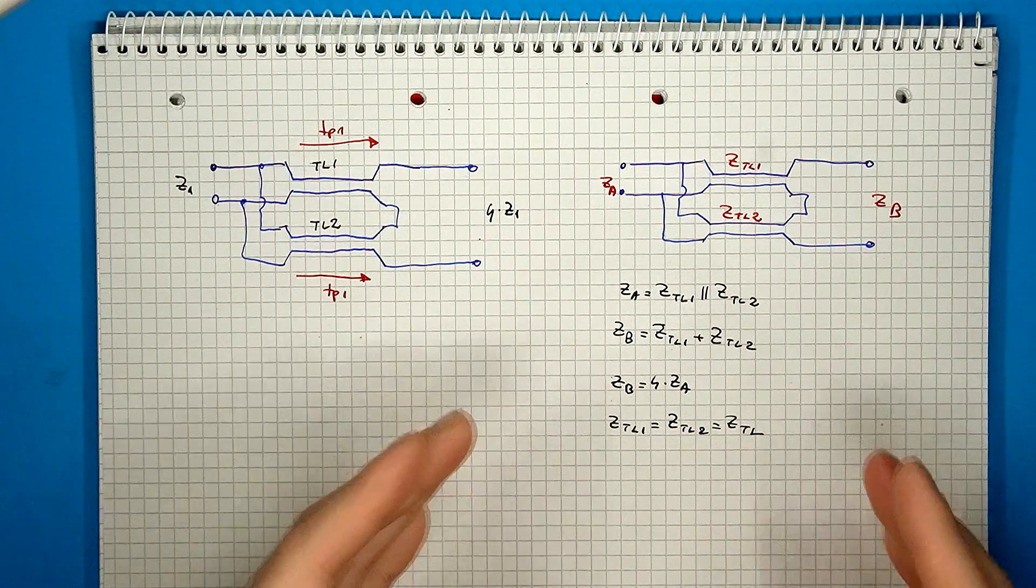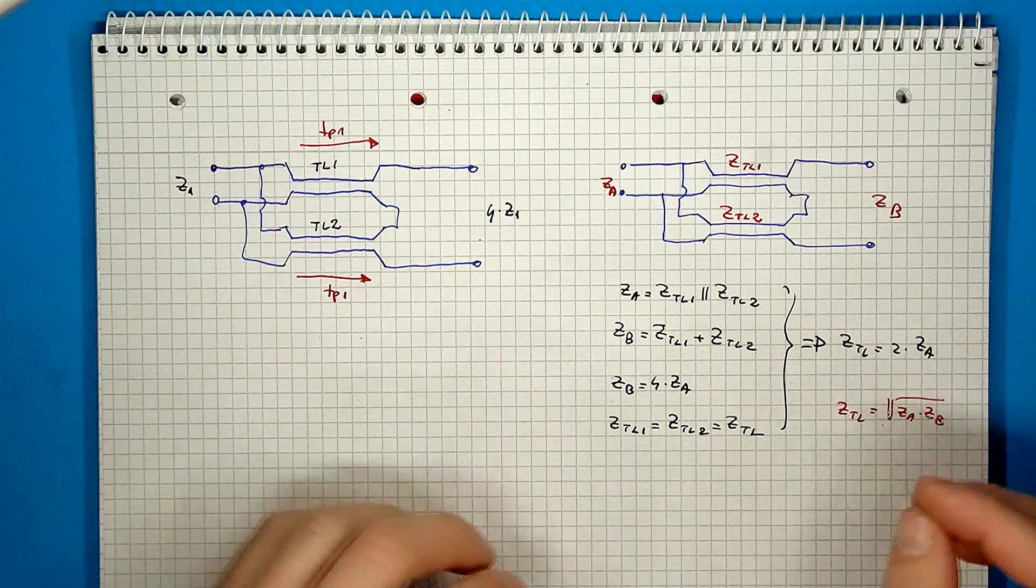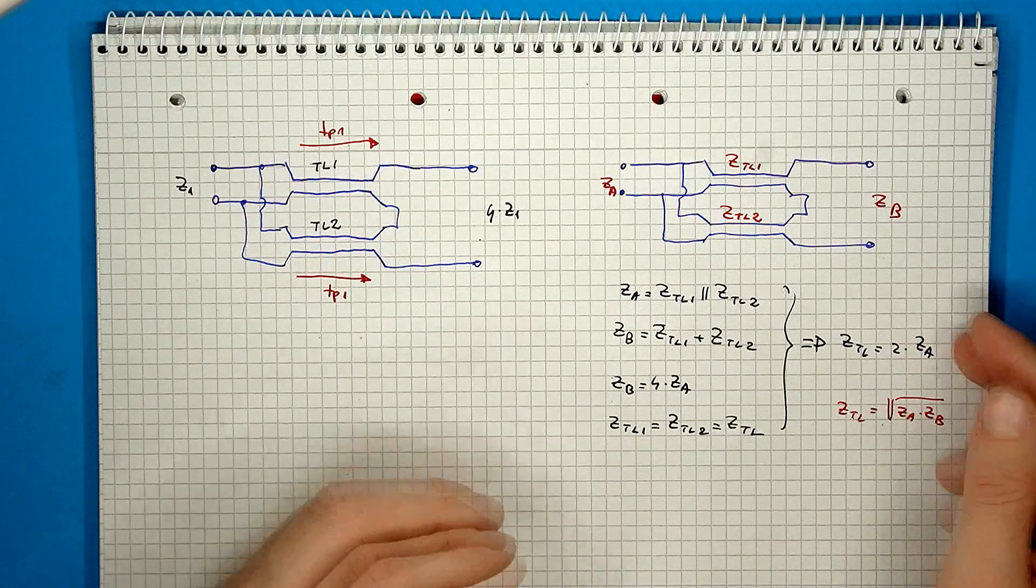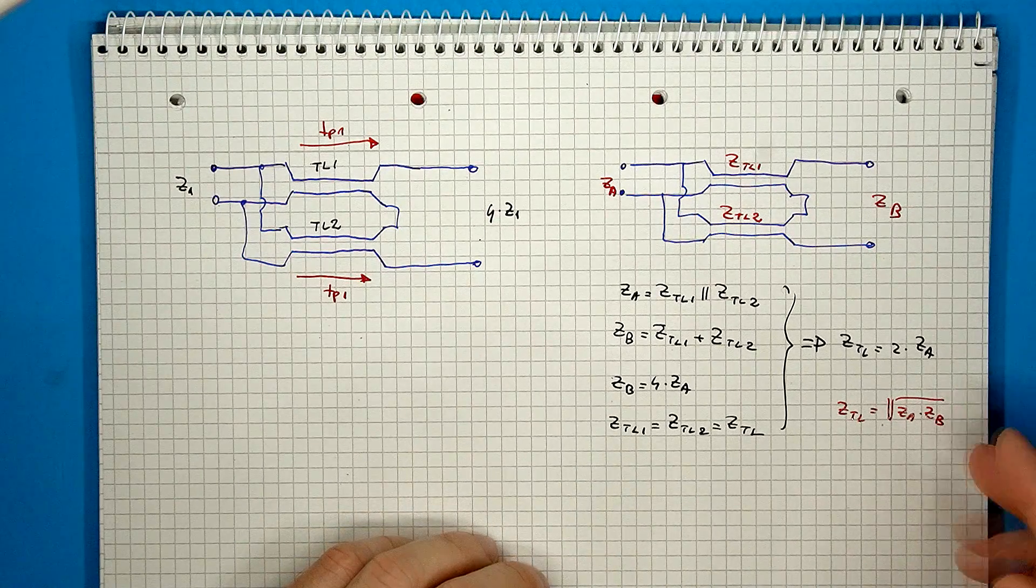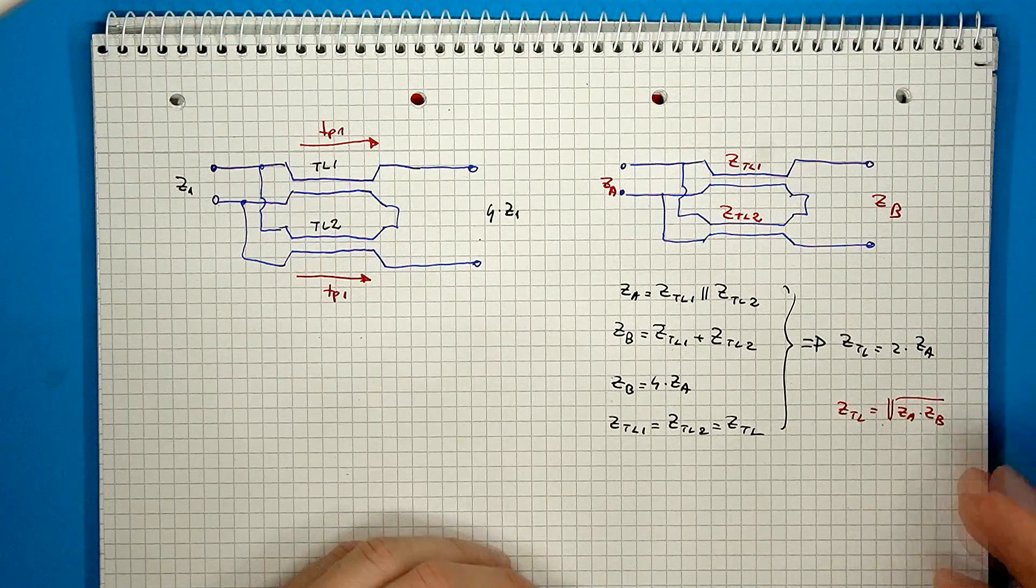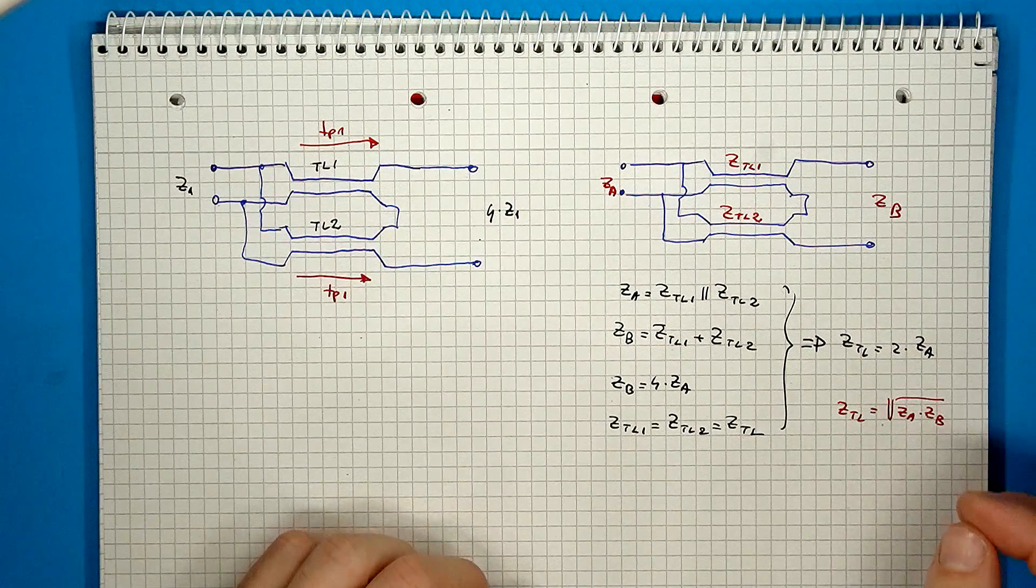And in this particular case, the structure is supposed to work like a 1 to 4 impedance transformer, and we can consider that both of our transmission lines have the same characteristic impedance. From all of these, we can work out the exact impedance value that we need. In this particular case, it is twice the lower impedance value, but a more general expression is the square root of the product of the input and output impedance. This second expression will be valid for other impedance ratios as well.